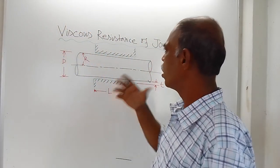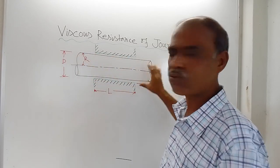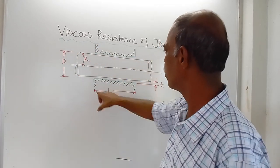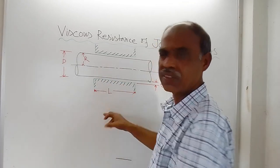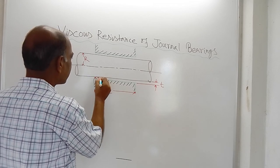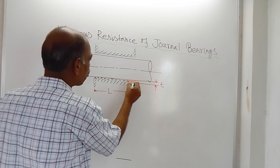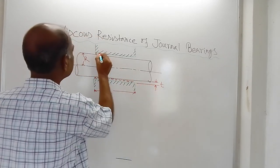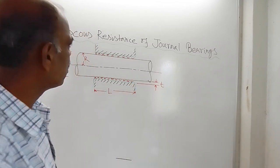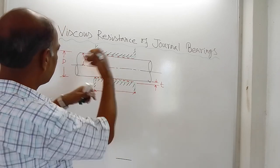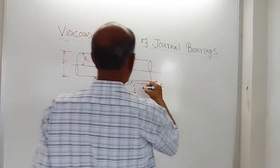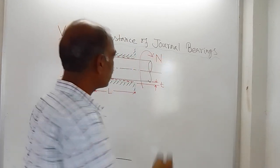I have taken a pipe of circular cross section having radius R, and capital D is the diameter. This is the journal bearing, having a length of capital L. Here there is viscous oil of thickness T — here T is not time, T is the thickness of the oil. And suppose this shaft is rotating with N RPM.